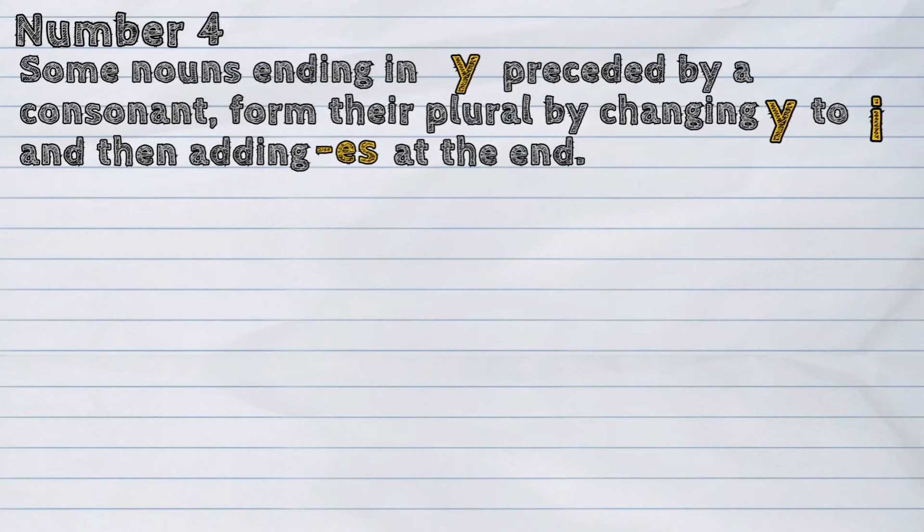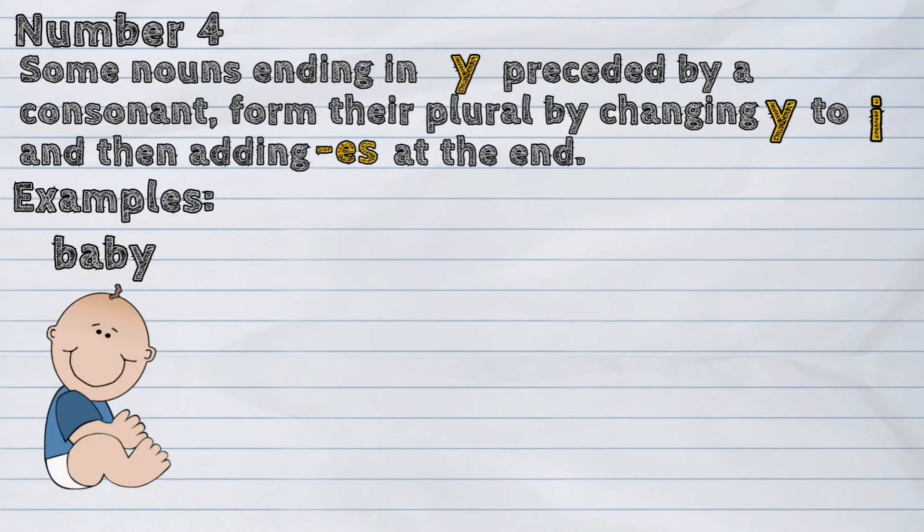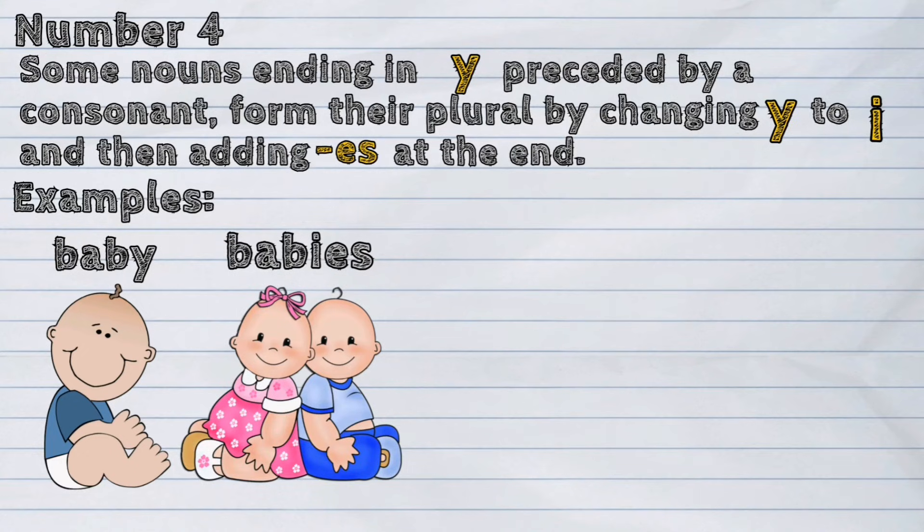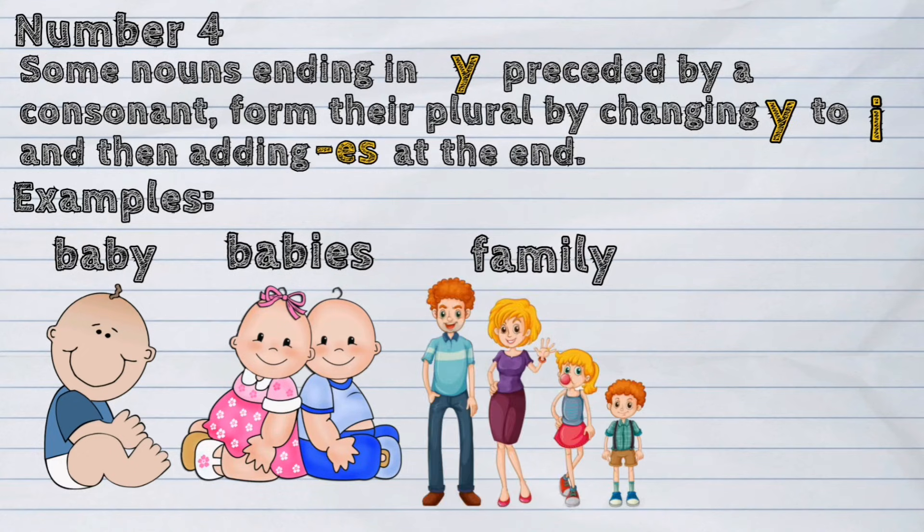Number four. Some nouns ending in 'y' preceded by a consonant form their plural by changing 'y' to 'i' and then adding 'es' at the end. Examples: baby, babies; family, families.